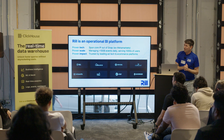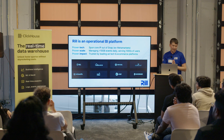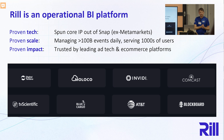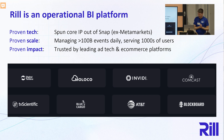Rill is an operational BI platform. We spun the core IP out of a company called Snapchat. We don't come to choosing OLAP databases easy because the company we sold to Snapchat was a business called MetaMarkets, which created Apache Druid almost 10 years ago. So we know a thing or two about building databases, and I hope no one took offense at the criticisms of what's missing in ClickHouse.